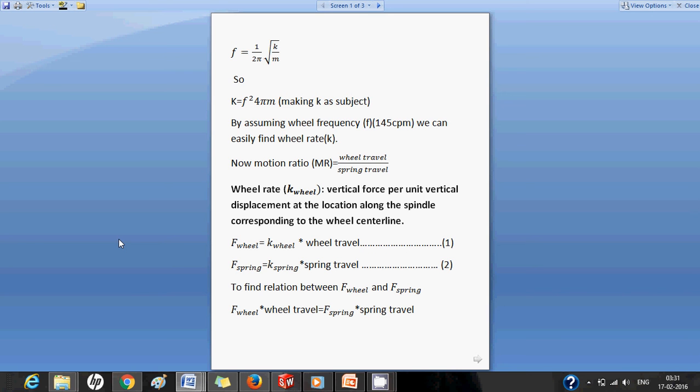Now we need to find the relation between f wheel and f spring in terms of motion ratio. So f wheel into wheel travel is equal to f spring into spring travel. This equation comes from the principle of virtual work. We know fx is equal to energy. So f wheel is the vertical force acting on the wheel and wheel travel is the vertical displacement. In the same way f spring is the force which is acting along the axis of the spring and the spring travel is the compression along the axis of the spring.